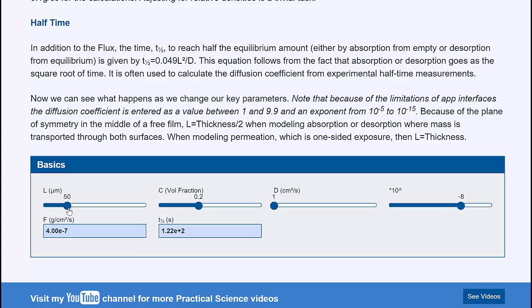So if I double the thickness from 50 microns to 100 microns, we'll see that the flux should halve. And indeed, if I go up to 100, the flux does halve.